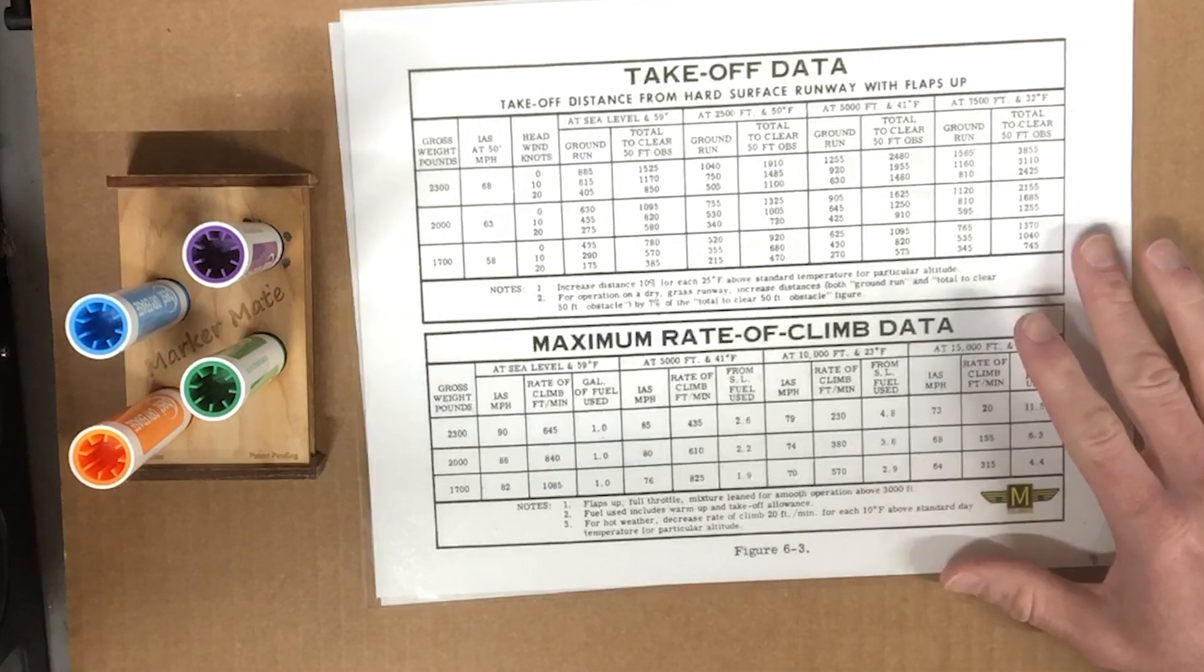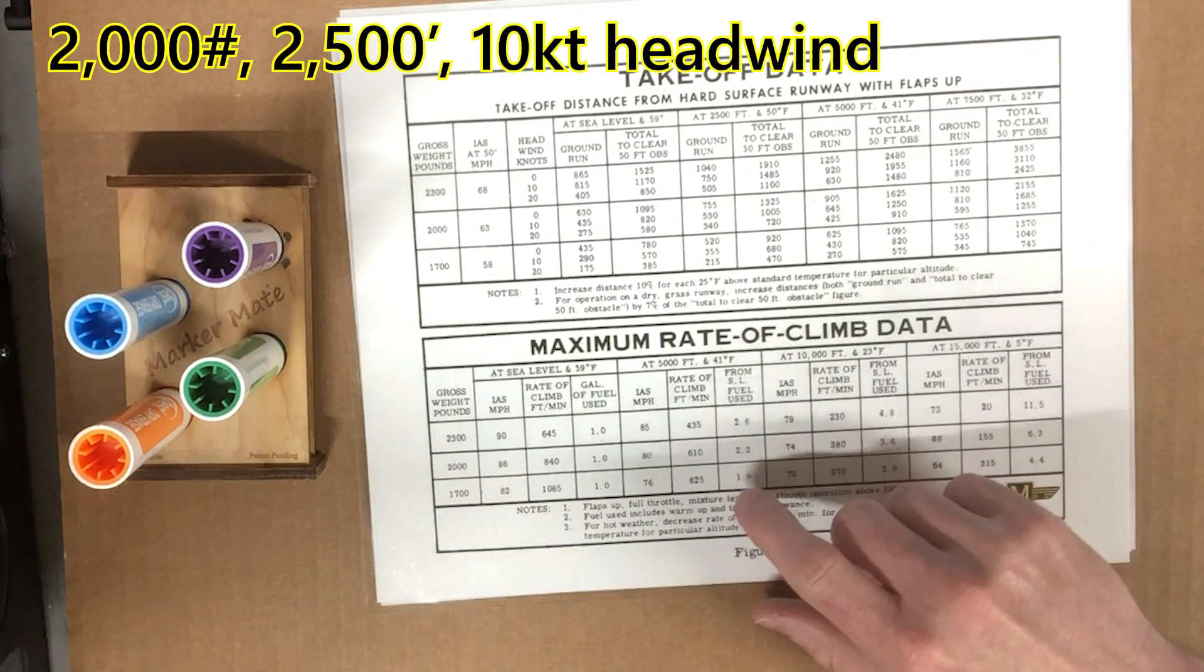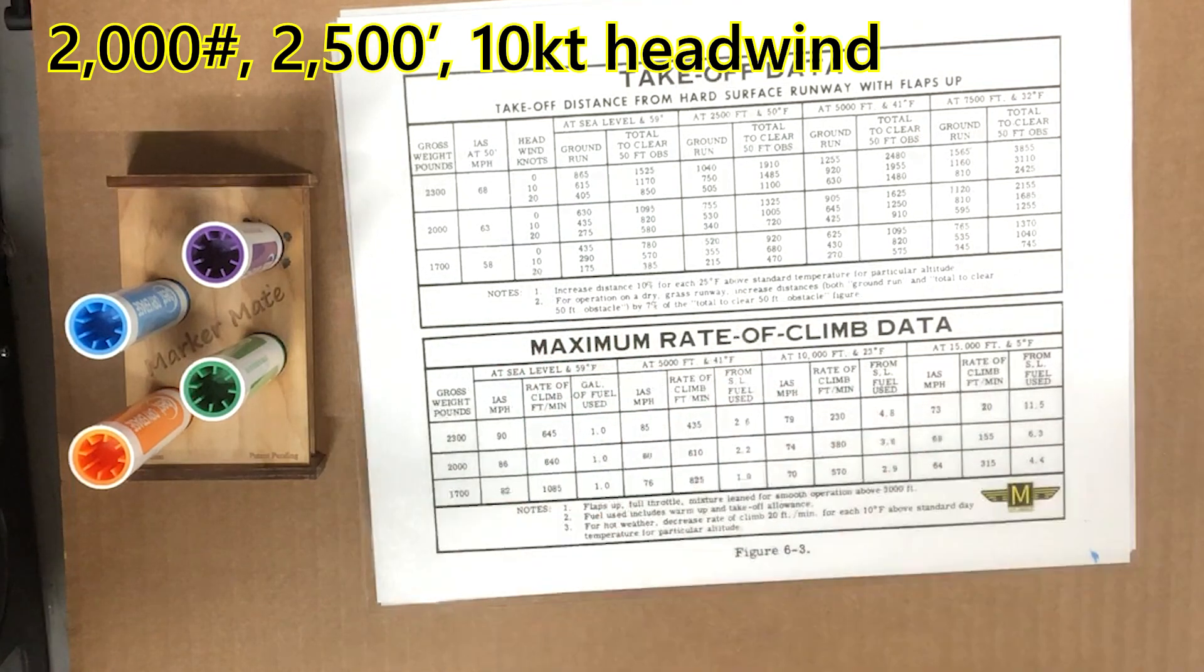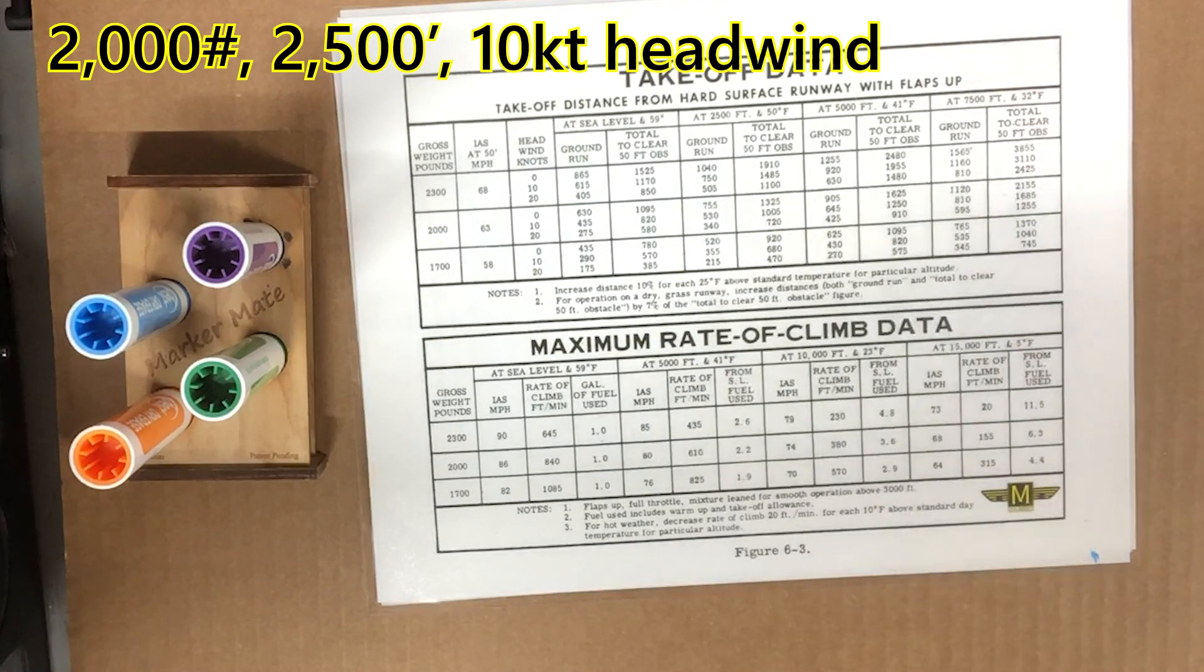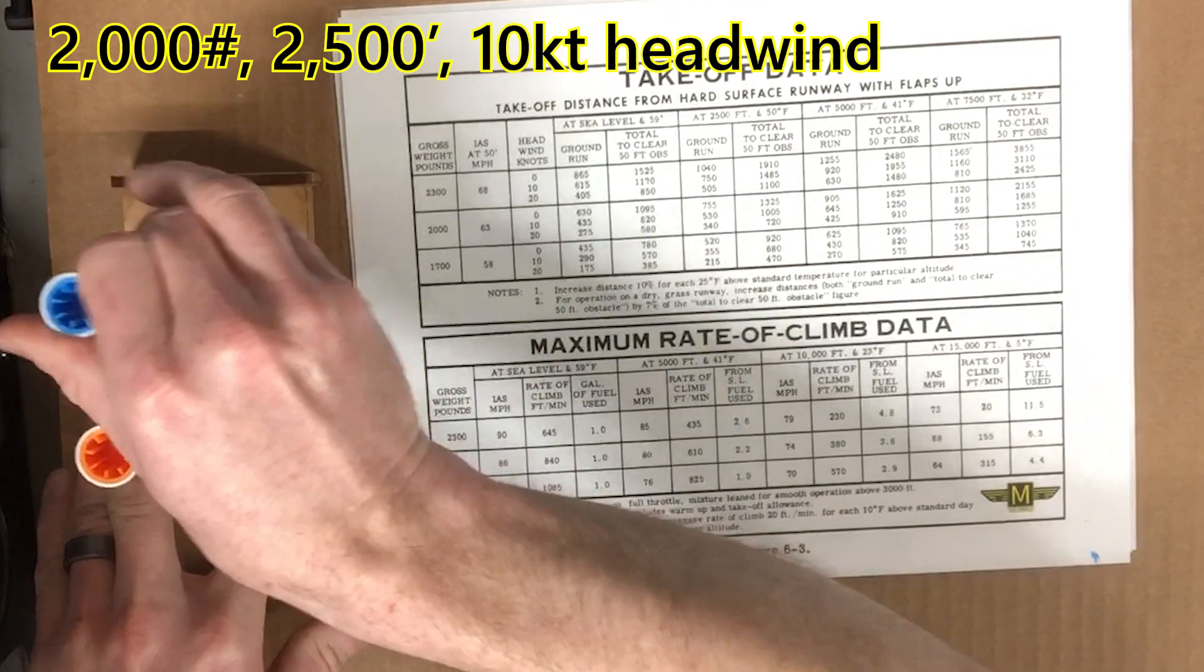So for instance, if you're in a Cessna 172, you're at 2,000 pounds weight, you have a 10-knot headwind, you're at 2,500 feet elevation, what is your ground run and takeoff over a 50-foot obstacle? This one's pretty easy.